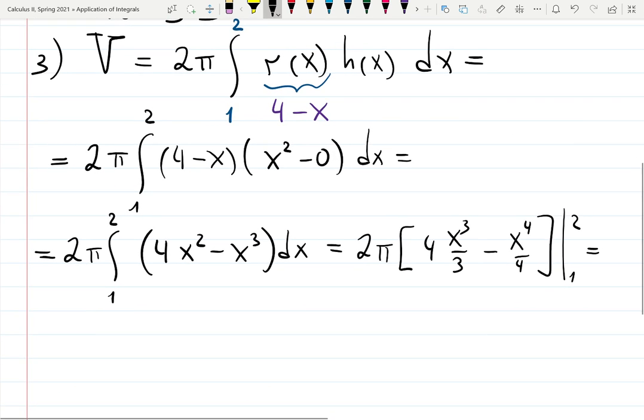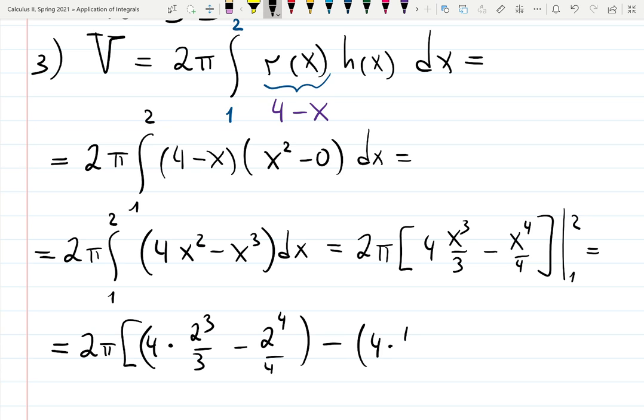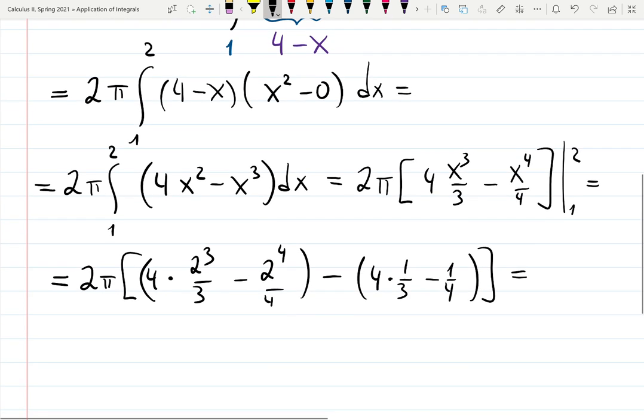And the answer will be 2π. Plug the top. That's going to be 4 times 2 cubed over 3 minus 2 to the 4 over 4. Put parentheses that will help you to avoid mistakes. Open one more parentheses. Plug the bottom. 4 times 1 third minus 1 quarter. Collect common denominators. Simplify. And you will get 67 over 6 π.